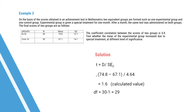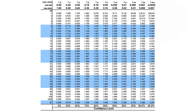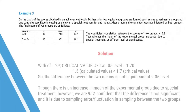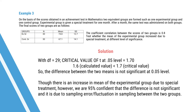Degree of freedom = n − 1 = 30 − 1 = 29. Referring to the t-table with df = 29, the critical value at the 0.05 level is 1.70. The calculated value 1.6 is smaller than the critical value 1.70. Therefore, the difference between the two means is not significant at the 0.05 level. Though there is an increase in the experimental group mean, we are 95% confident the difference is not significant — it is due to sampling error or fluctuation between the two groups.